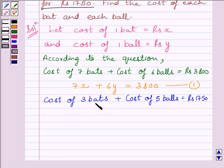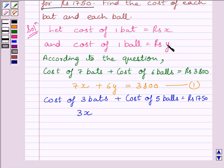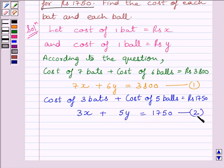The cost of 3 bats would be equal to 3X, as the cost of 1 bat is Rs. X. The cost of 5 balls would be equal to 5Y. So we get the equation: 3X plus 5Y is equal to Rs. 1750. Let us name this equation as 2.